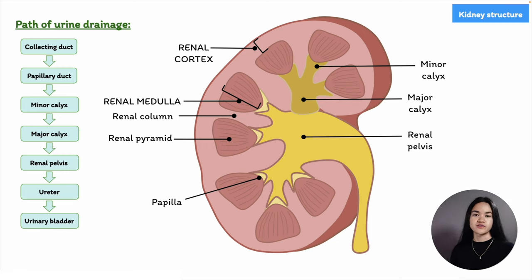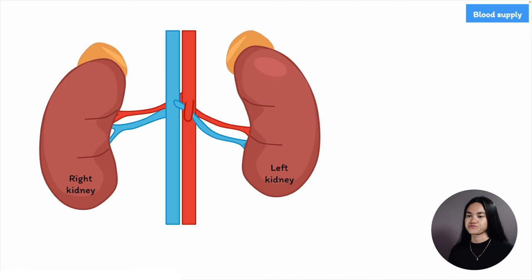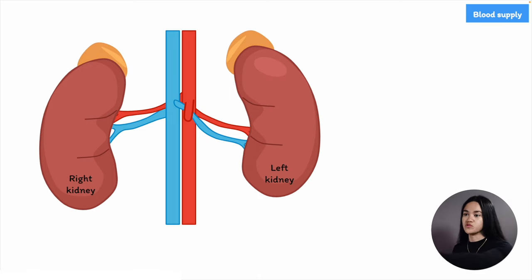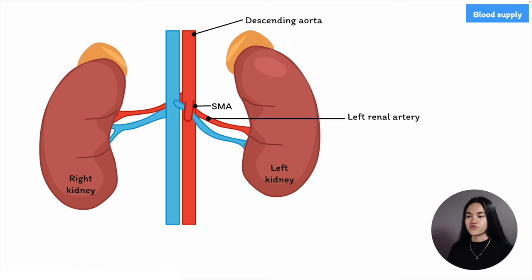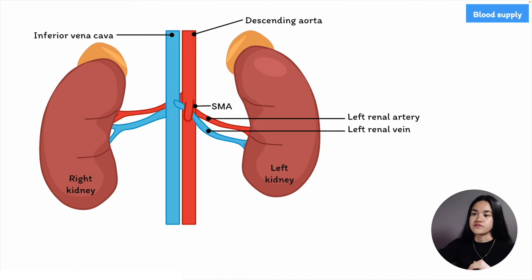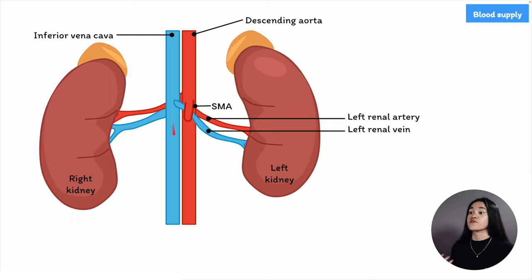Now let's go through the arterial supply and venous drainage of the kidney. The kidneys are supplied with blood via the renal arteries, which branch directly from the abdominal aorta at the level of the superior mesenteric artery. About 20% of cardiac output goes to the kidneys via the renal arteries. The renal arteries lie behind the renal veins, which drain the kidneys into the inferior vena cava. The left renal vein is longer because the inferior vena cava is slightly more to the right of the midline.